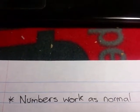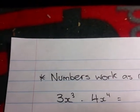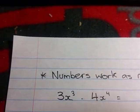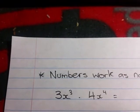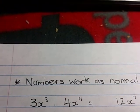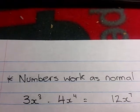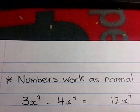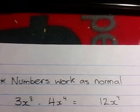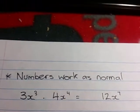The second most important thing to consider, numbers work as normal. If you have 3x to the 3 times 4x to the 4, the 3 and the 4 being numbers, they multiply like they always have, so you would end up with 12 in your final answer. And then the x to the 3 times x to the 4 will follow the law of exponent. Final answer of 12x to the 7. Numbers operating like normal, and the law of exponents only working on the exponents.